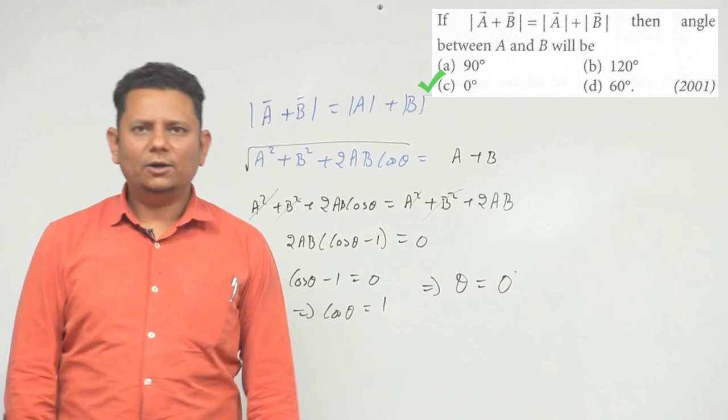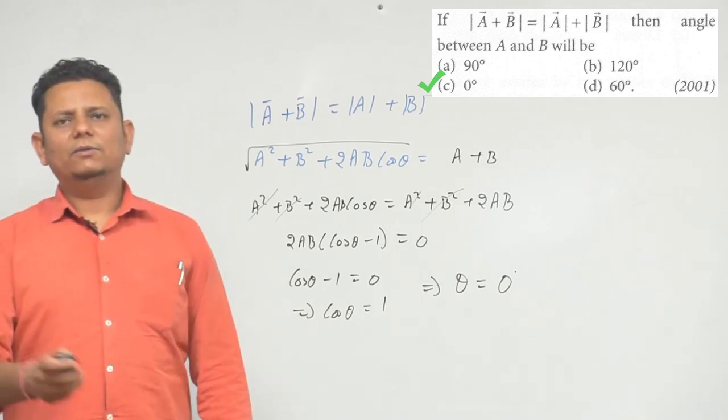All right, so based on this haem kaasakta hai, kye option number c, 0 degree will be the correct choice. Next.